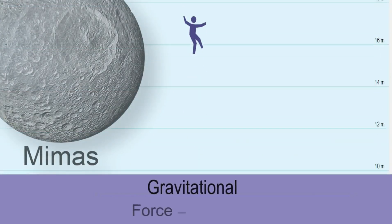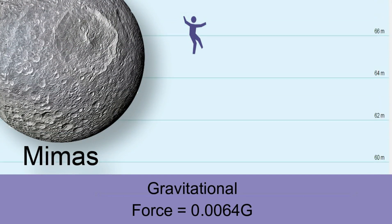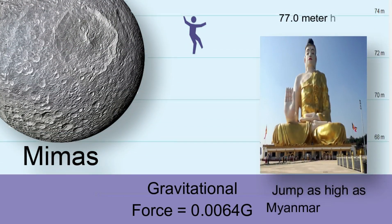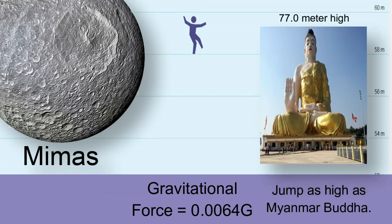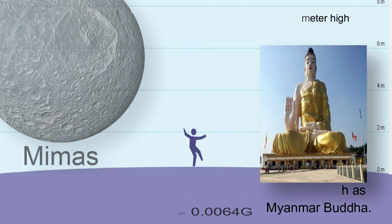Mimas: Saturn's gray moon resembles a real-life Death Star from the movie Star Wars. The gravitational force on Mimas is 156 times lesser than the Earth. You can jump as high as 77 meters, same as one of the tallest Buddha statues in the world.